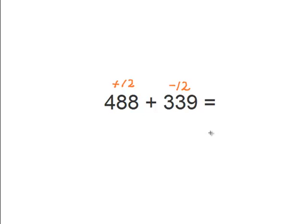Now by adding 12 to the 488, we get a nicer number, 500. So this is easier to work with. 500 plus 327 equals, as we can easily see, 827. Therefore, 488 plus 339 equals 827.